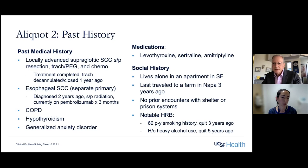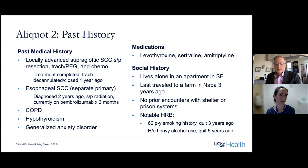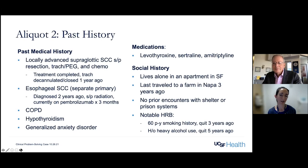Wachter notes the thyroid point — he could be taking too much and be hyperthyroid explaining weight loss and weakness, or hypothyroid explaining weakness. On the farm in Napa three years ago, Sarah doesn't think it's likely a contributor to this case — if he had started symptoms three years ago she'd be more interested, but it's probably unrelated.